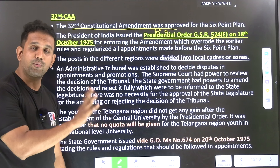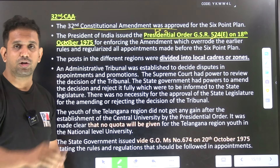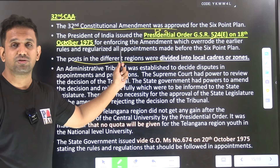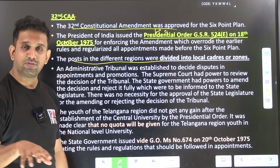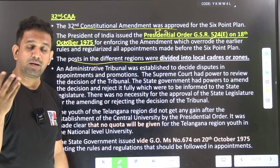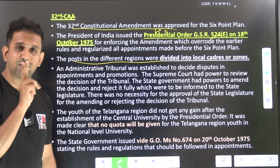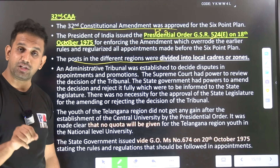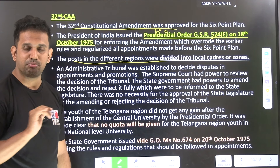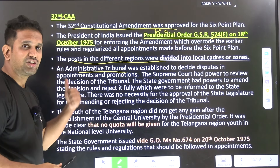The Presidential Order divided posts in different regions into local cadres or zones. In United Andhra Pradesh, four zones were given to Andhra, two zones to Telangana, and Hyderabad as a free zone. This zonal system was introduced by the presidential order. The Administrative Tribunal was established to decide disputes in appointment and promotion; if unhappy with its decision, one could go to the Supreme Court.